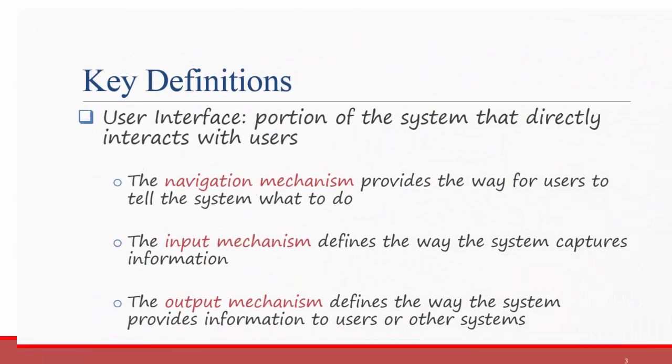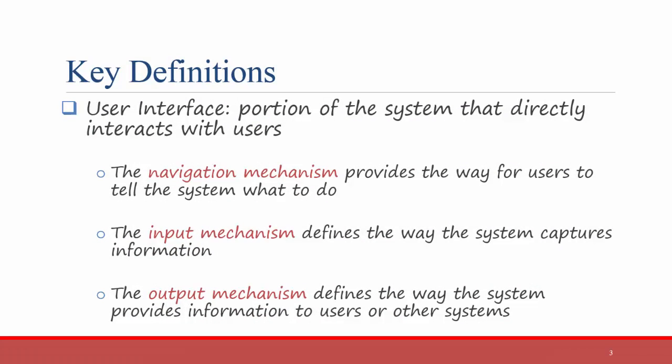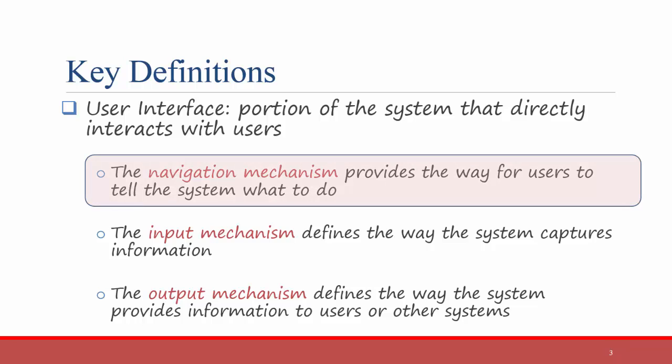If you remember from a previous video, the user interface consists of three separate components: the navigation mechanism, the input mechanism, and the output mechanism. This video focuses on the navigation mechanism — that is, the way that users tell the system what to do.